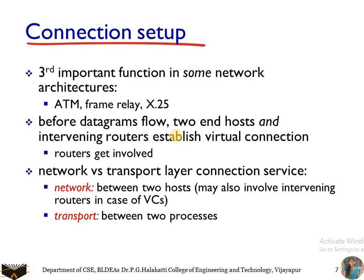One functionality of the network layer is connection setup and packet forwarding. Examples such as ATM, Frame Relay, and X.25 use this architecture. Before datagrams flow, two end hosts and intermediate routers establish a virtual connection and routers get involved. Routers are considered resources, and all resources along the path from source to destination are reserved for the specific purpose of sending packets from source to destination.